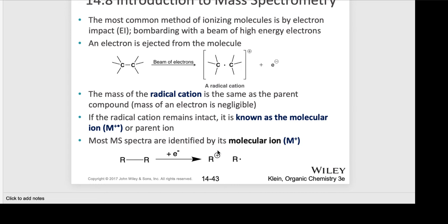The most common method of ionizing molecules is called EI. We're bombarding a molecule with a beam of high-energy electrons — one comes in and then two actually come out. So using that electron beam, instead of having two electrons represented in a line here — a carbon-carbon bond — now we only have one, and there's a positive charge. This is one way of drawing the radical cation.